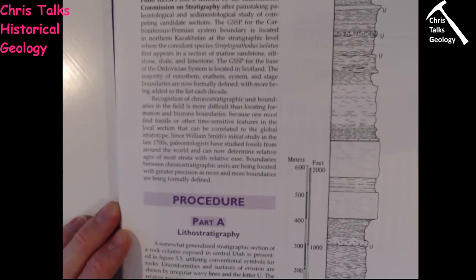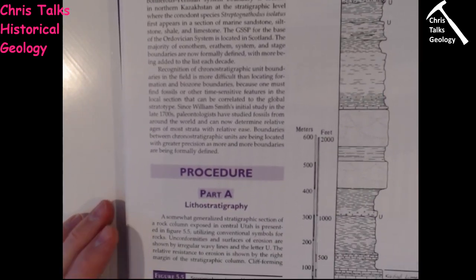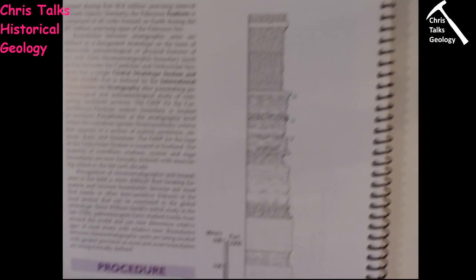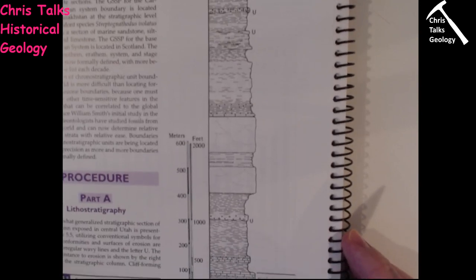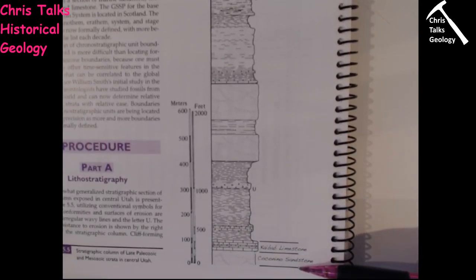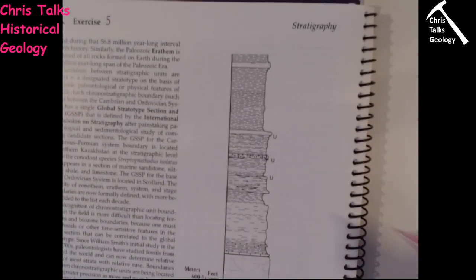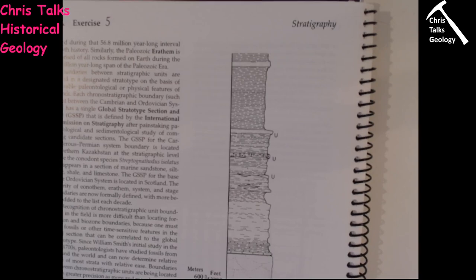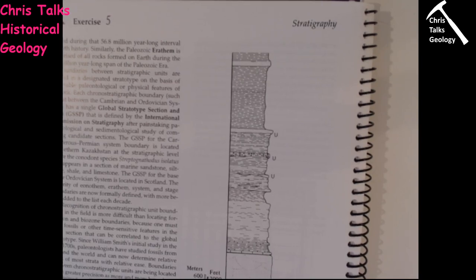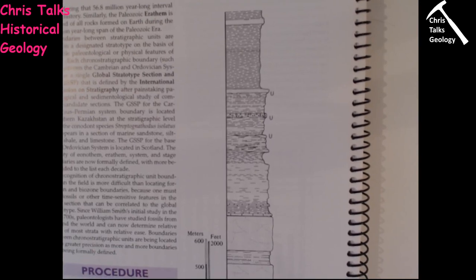Let's start with part A, which focuses on lithostratigraphy. On page 64 we have the stratigraphic column, coming all the way down to a sandstone at the bottom up to the top. Our job is to subdivide the rocks in the column into formations. A formation can be a single layer of rock or more than one layer — essentially, a formation is a unit geologists use to make their lives easier.